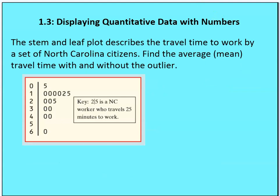So now let's incorporate that into a stem-and-leaf plot. I have a stem-and-leaf plot and I want you to work along with me — this is not classwork to turn in — and you're going to find the average or mean travel time with and without the outlier. We're going to say that 60 is an outlier for now. Calculate the mean value both with and without the outlier. You can pause here and then we're going to come back.